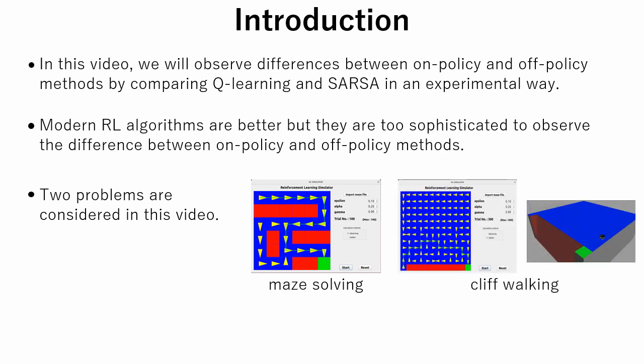The second problem is cliff walking. The shortest path along the cliff must be determined, while falling into a cliff must be avoided.